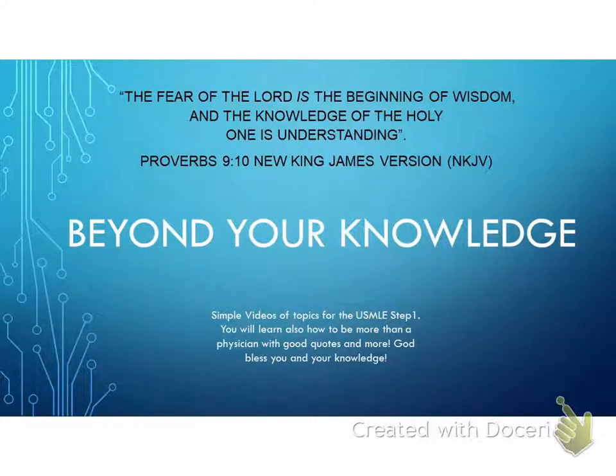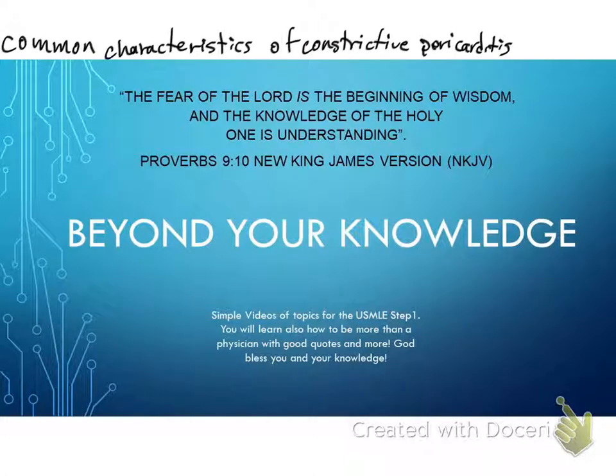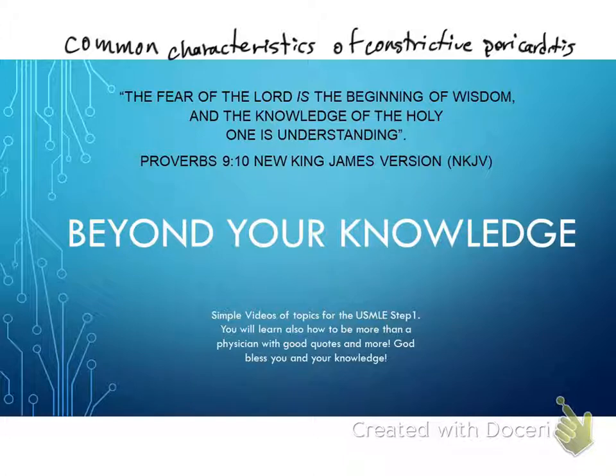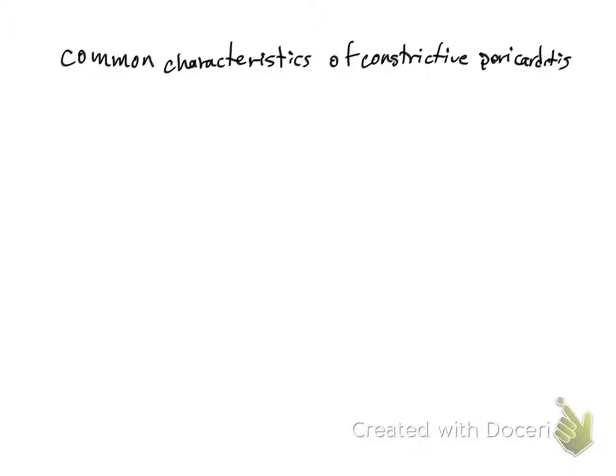Hi everyone, welcome back to Bagging Knowledge. Today we are going to be studying the common characteristics of constrictive pericarditis. Before we continue, I would like to share Matthew 18:21-22, where Peter asks the Lord how often he should forgive his brother who sins against him, as many as seven times? Jesus replies not seven times, but seventy times seven. Forgiveness is very good for your health and mine.